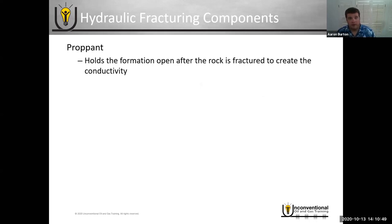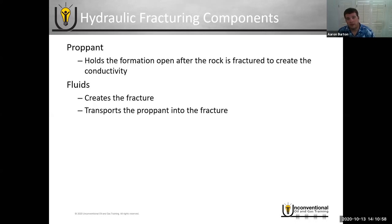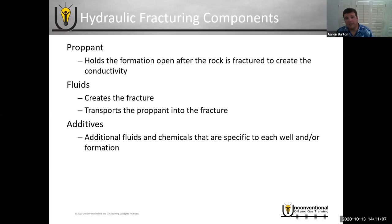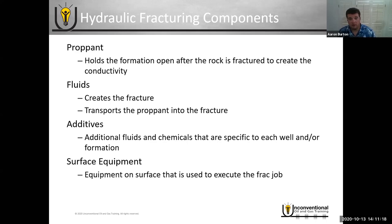The primary components of hydraulic fracturing are: proppant, which holds the formation open after you've created the fracture; fluid, which creates the fracture and transports the proppant into it; additives, which are additional fluids and chemicals specific to each well and formation; and surface equipment, which is everything used on surface to execute the frac job you've designed.